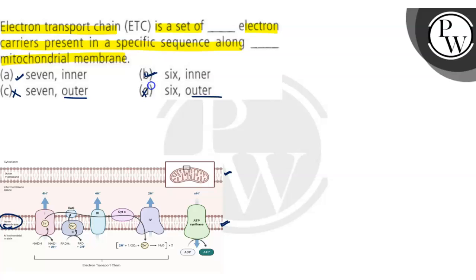Now in the electron transport chain, there are seven electron acceptors present. Complex I, Complex II, Coenzyme Q, Complex III, Cytochrome C, Cytochrome A, and Cytochrome A3, then O2. Now count: one, two, three, four, five, six, and seven.